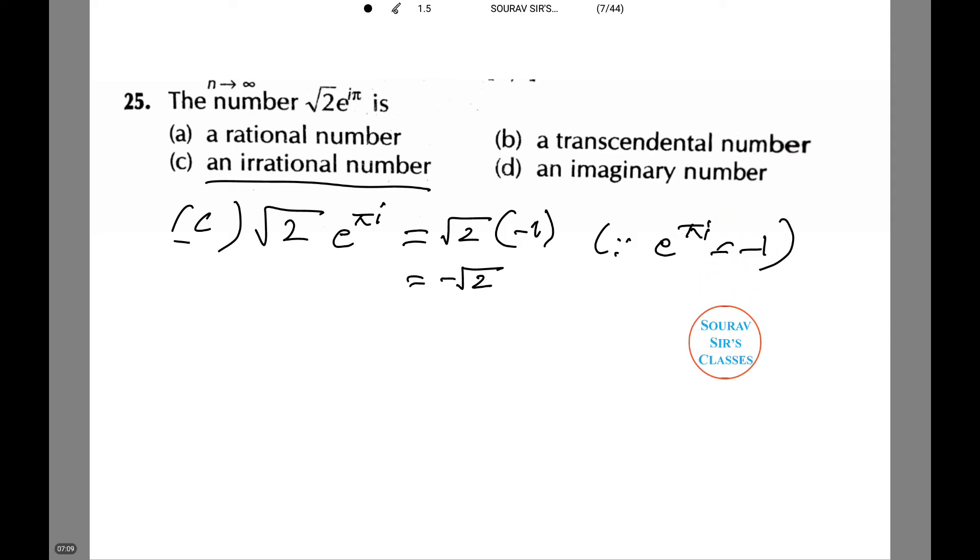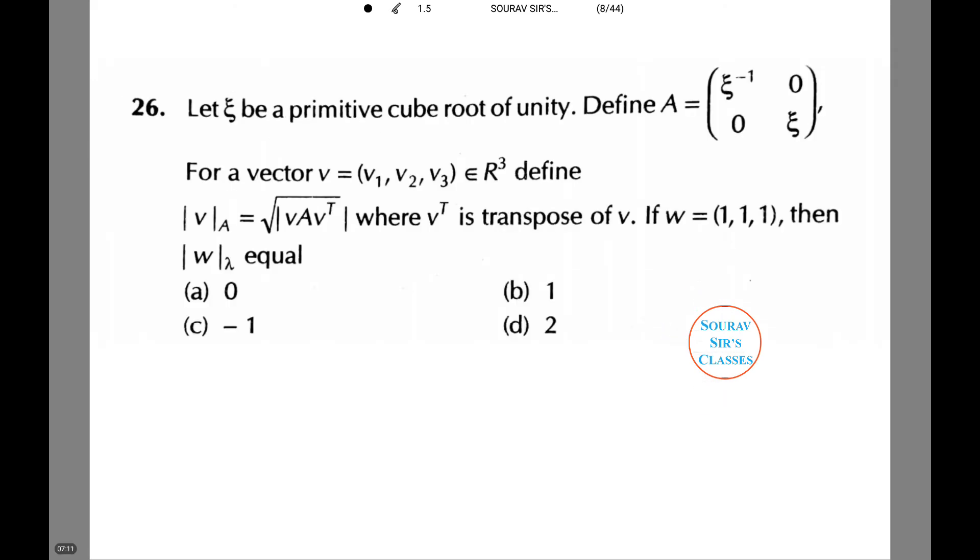Let's see another question. Let ξ be a primitive cube root of unity. Now we define A equals the matrix [ξ^(-1), 0; 0, ξ] for a vector v = (v₁, v₂, v₃) belonging to R³.